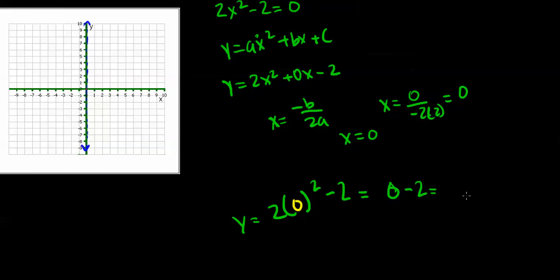When we simplify this equation, we get 0 - 2 = -2, which is the y-value of the vertex. So our vertex is (0, -2). Let's plot that point.